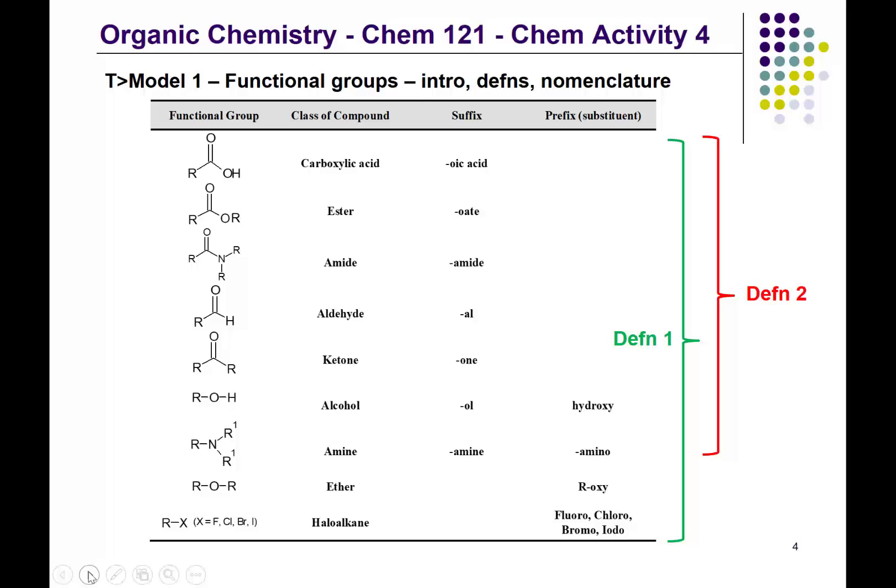Many of the other functional groups also have prefixes; we'd like you to know about two of them — the alcohol and the amine. You can have more than one functional group in an organic compound, so it will be the functional group of higher priority that defines the suffix. The functional groups are listed in hierarchical order: carboxylic acid, ester, amide, and aldehyde are all more important than the alcohol and the amine. So if the primary functional group is a carboxylic acid or ester but an alcohol or amine is also present, you need to use their prefix.